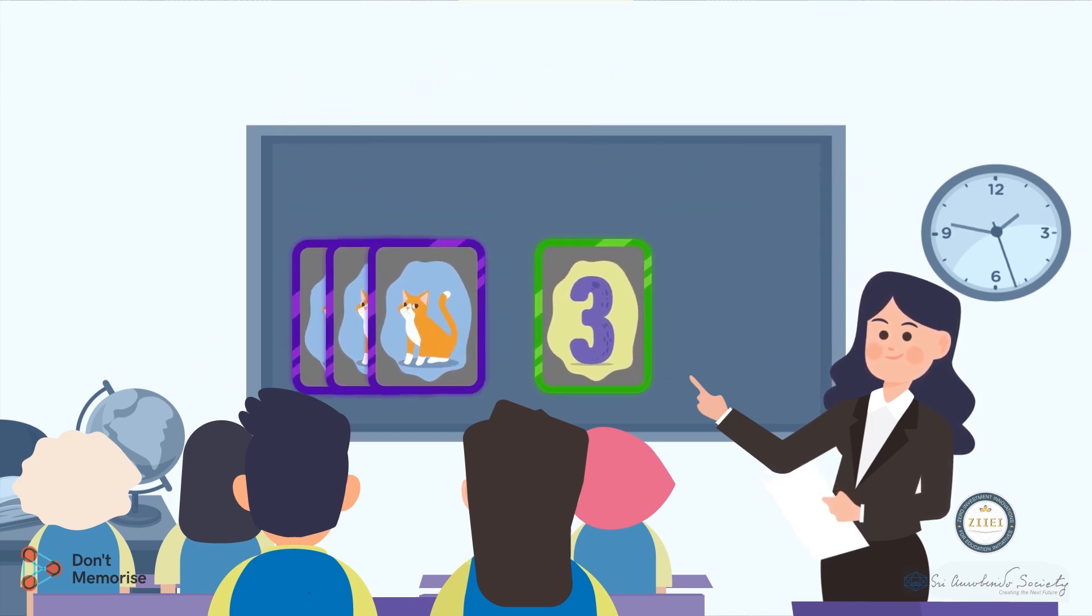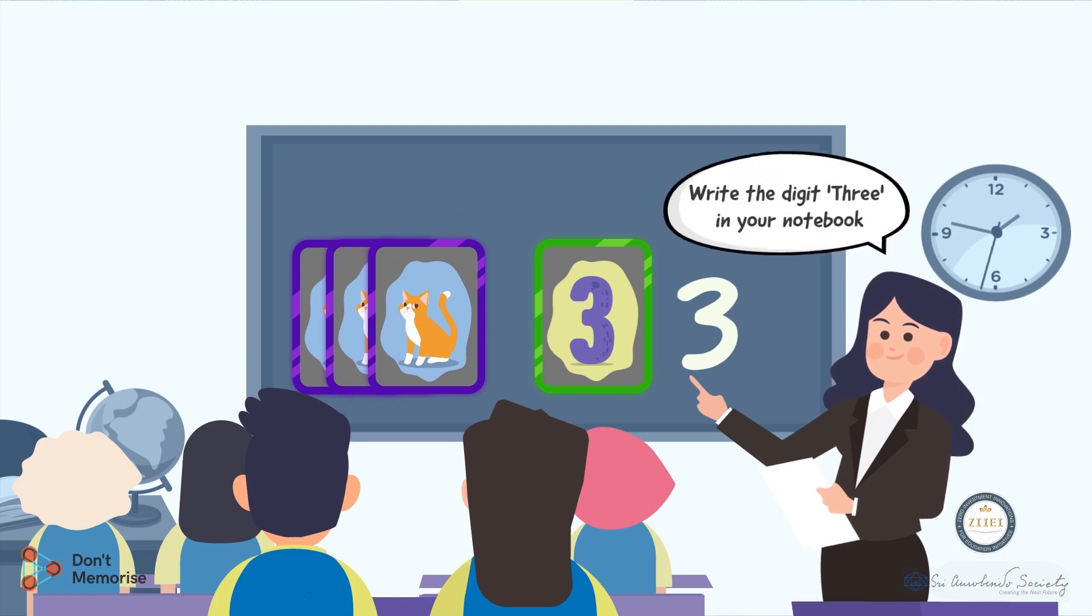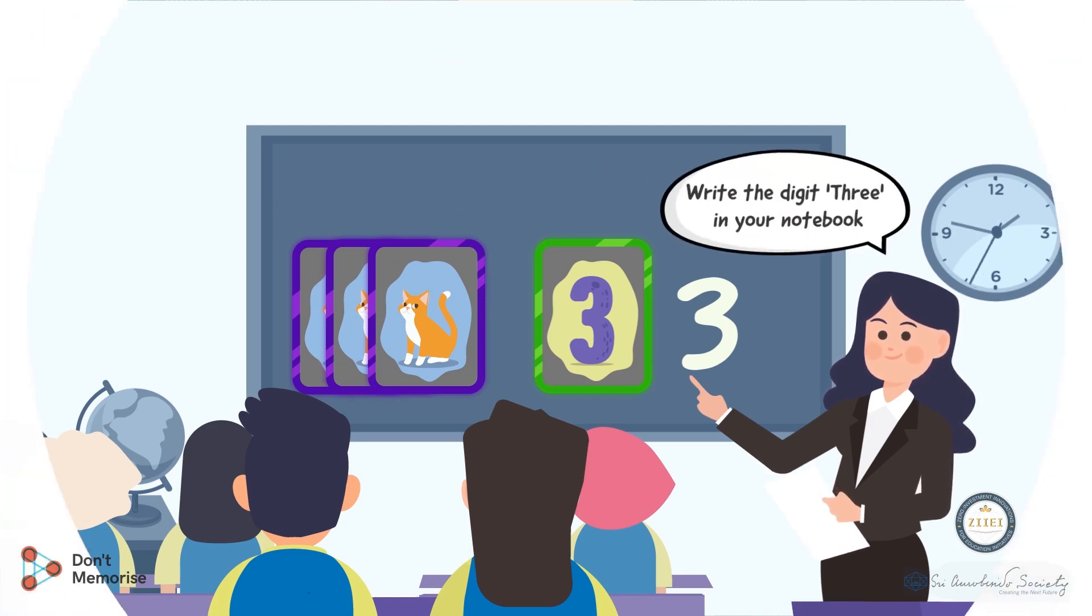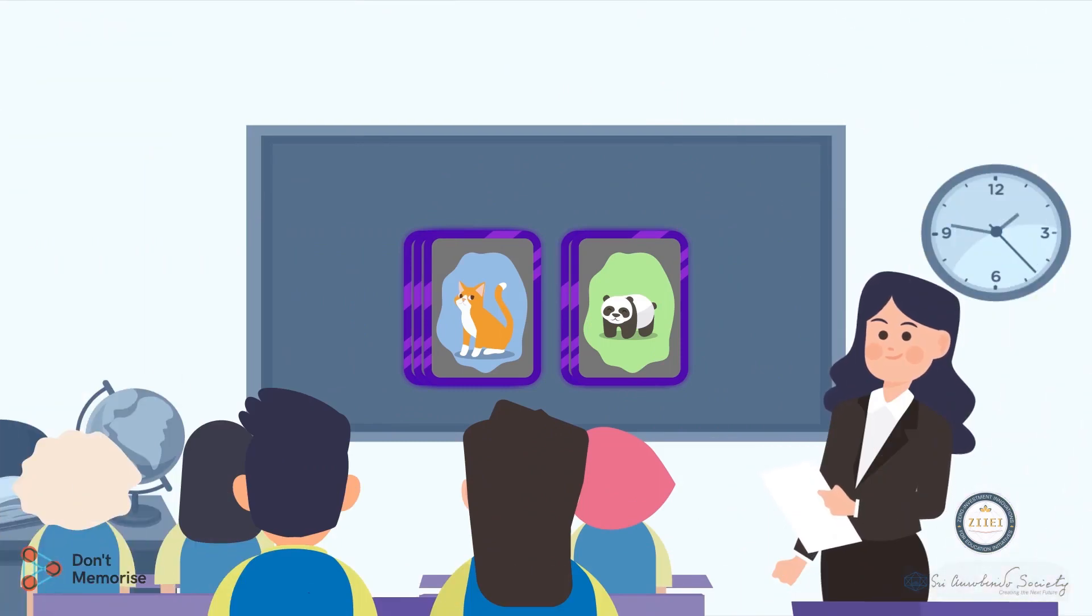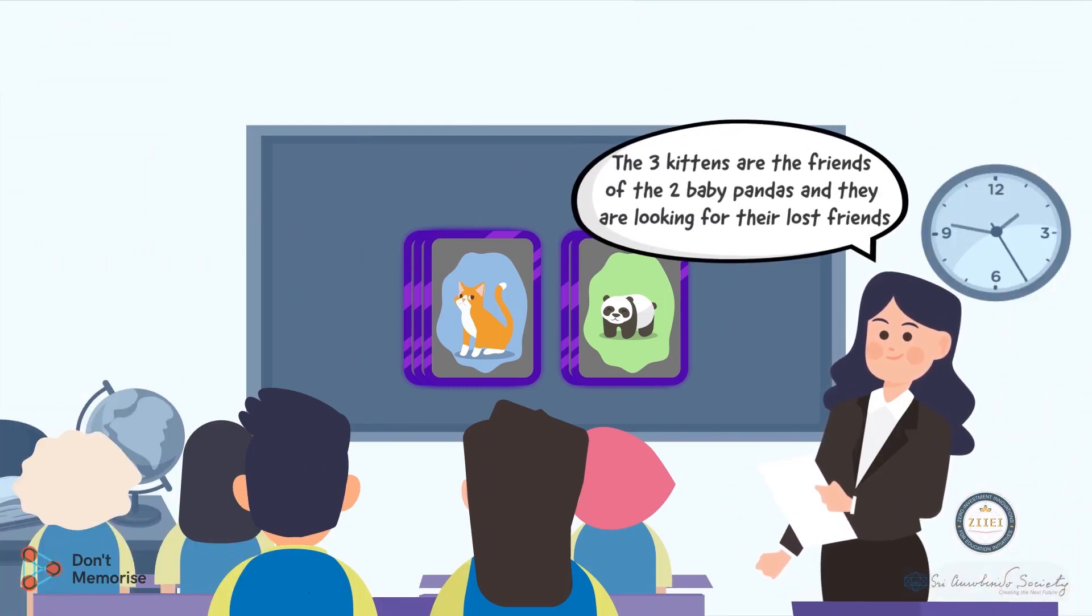Paste the three picture cards of the kitten on the board and write the number three. Instruct the students to write this digit as well in their notebooks. Once they've finished writing, convey to them that the three kittens are the friends of the two baby pandas and they're looking for their lost friends.